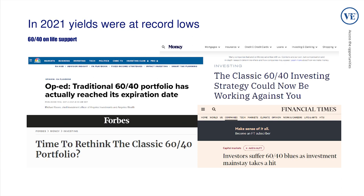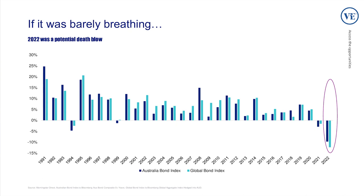With that in mind, the financial press was awash with talk about the death of the 60-40 portfolio. What came about in 2022 was potentially a death blow, which was obviously markets sold off heavily. As you can see circled on the chart there, the dark blue is the Aussie bond index — largely government bonds — and the lighter blue is global bonds, largely US government debt. Both were down 10-15% in a year. When equity markets were falling, the whole theory was equities fall, bonds go up — and that obviously didn't work.